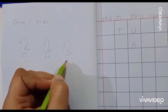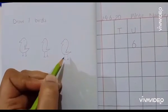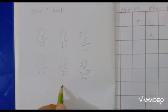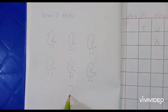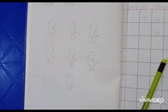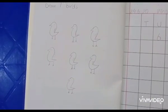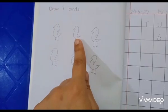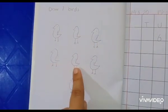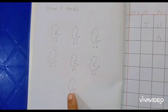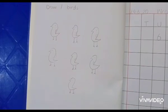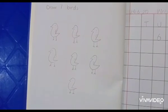Three. Now we will draw seven birds. Yes, count with me: one, two, three, four, five, six, seven. Seven birds. Now color them nicely.